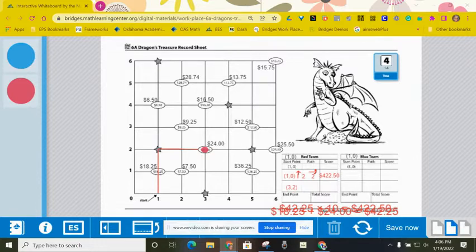For this game, each pair of players needs one Dragon's Treasure record sheet to share, one red and one blue game marker, one die numbered one through six, and some scratch paper.